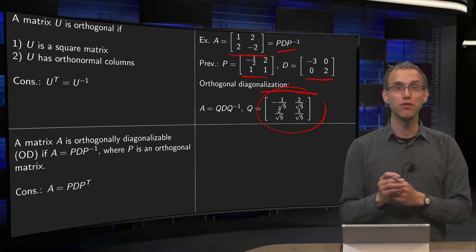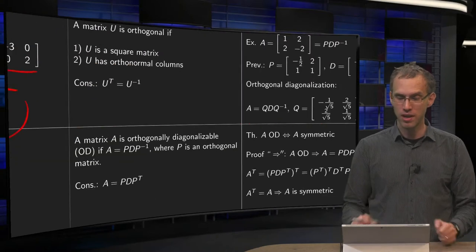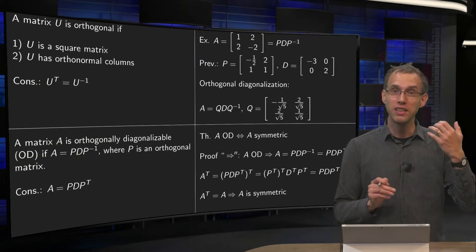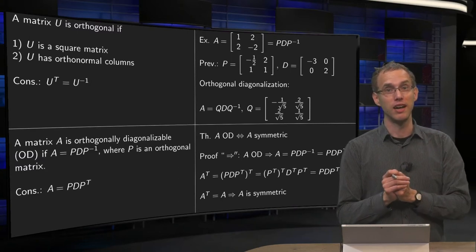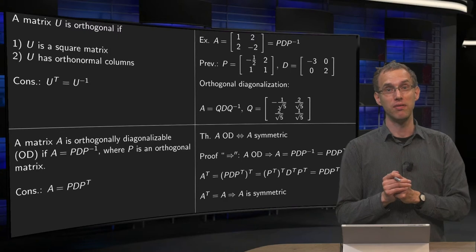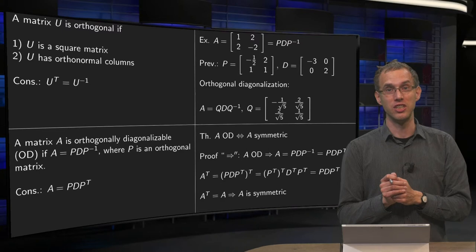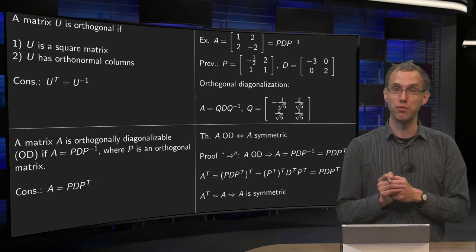So this matrix A, this symmetric matrix A happens to be orthogonally diagonalizable. So is this special for symmetric matrices? Could you find more matrices with this property? Well, actually we have a theorem about that.